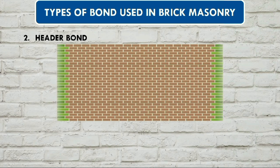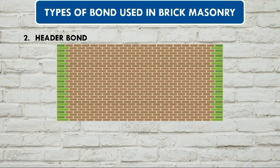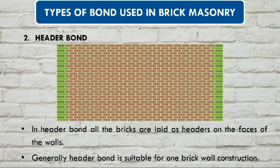This is a header bond. These bricks are laid across the width of the wall. The header bond is used for one-brick wall construction, meaning the whole brick is used across the wall thickness.